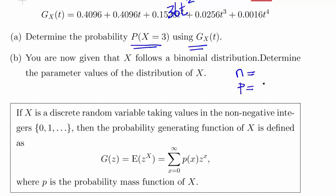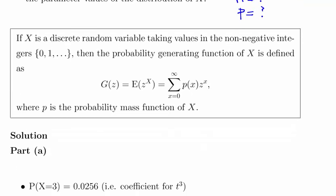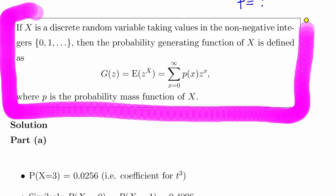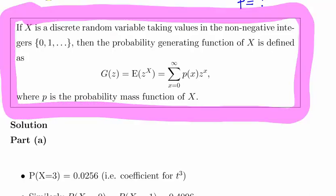Seeing as it's binomial, so we just have to figure out what n and p are. Now, this is the main definition of what a probability generating function is for a discrete random variable. This question asks the question in terms of t, so I will just actually work that out here.